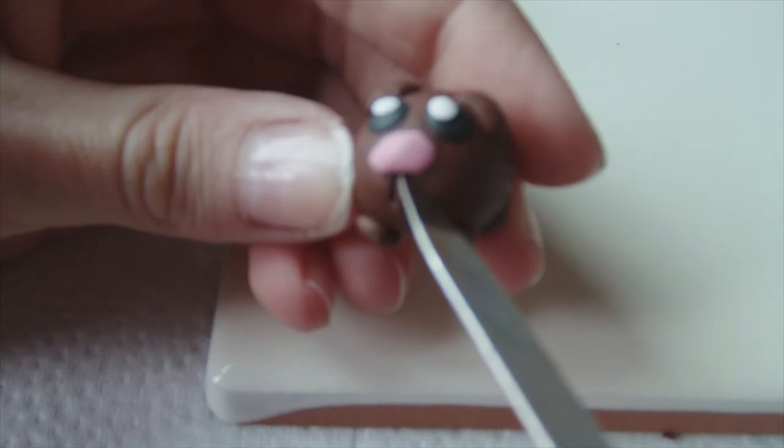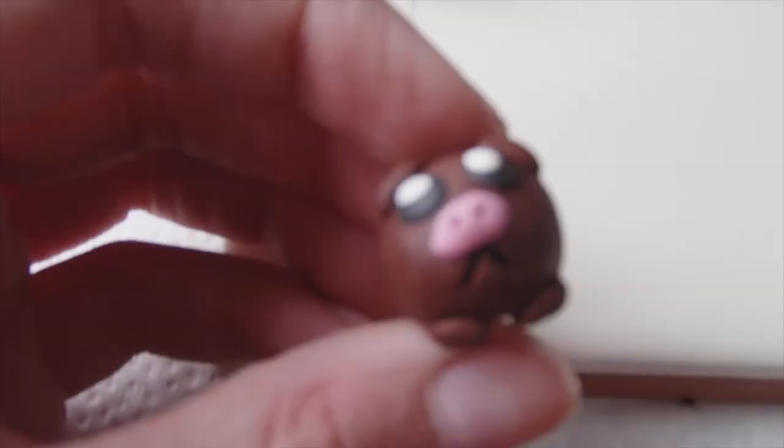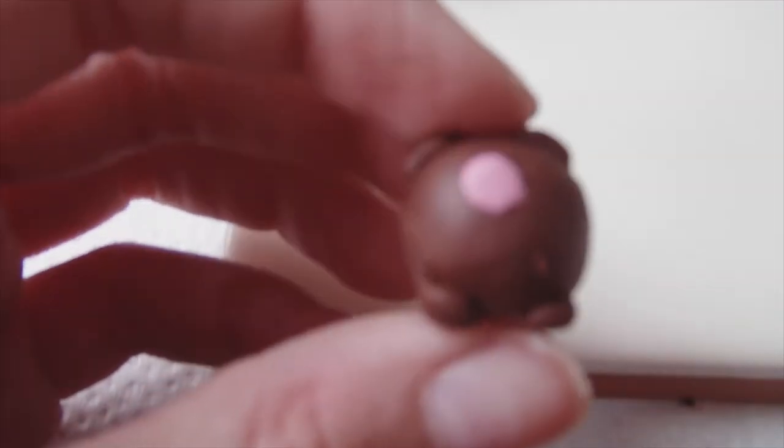For the mouth, put two little slits under the nose. And this is what your finished hamster will look like. Now bake your hamster with the instructions on your clay package.